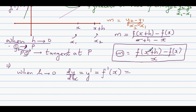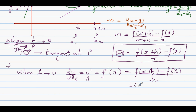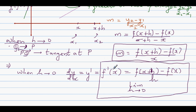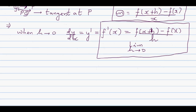This implies: when h approaches 0, m — the gradient — is written as dy by dx. This is change in y over change in x. Some books write this as y dash or f dash x. It equals the limit as h approaches zero of f of x plus h minus f of x over h. This is called the first principle.